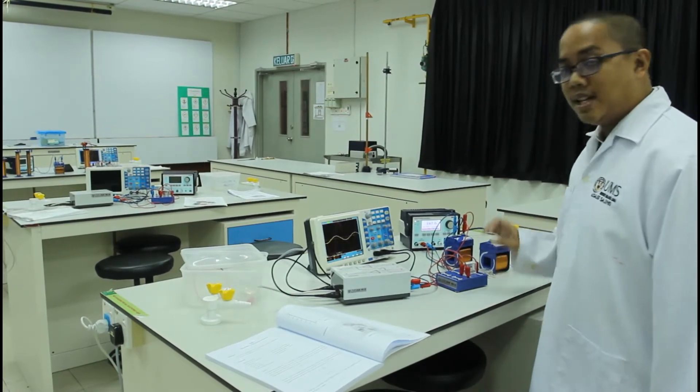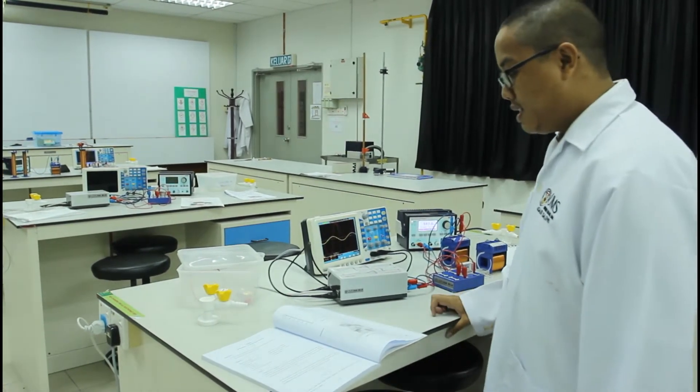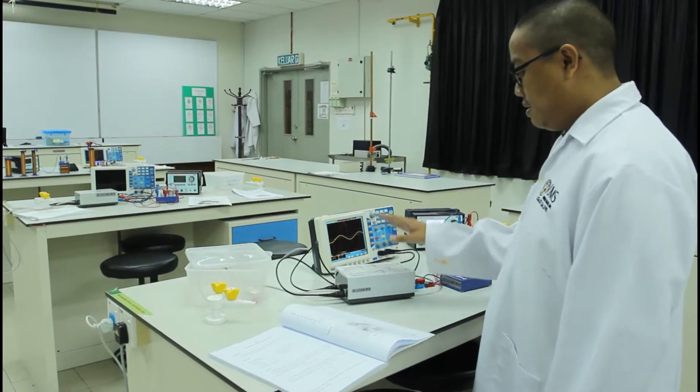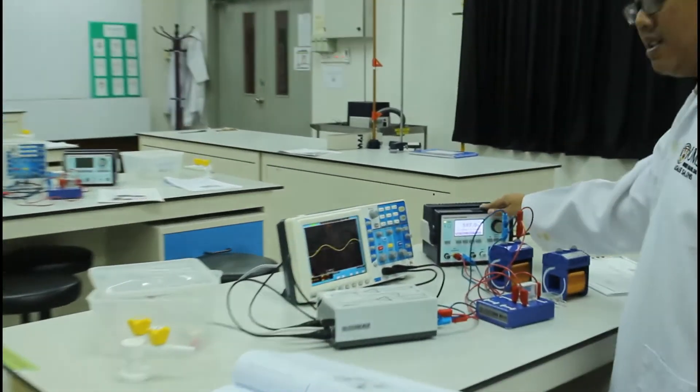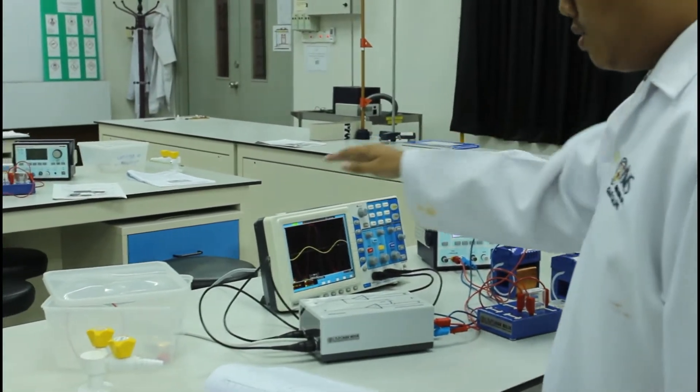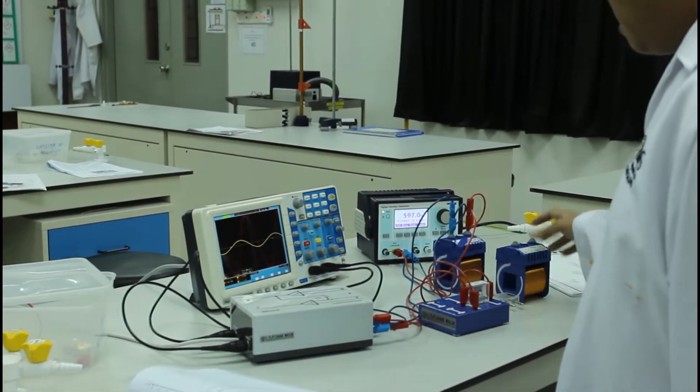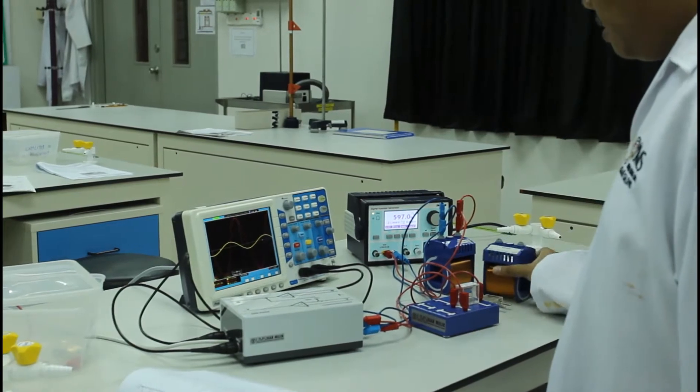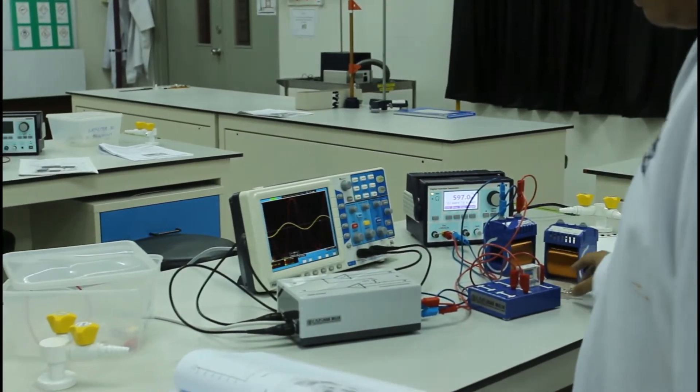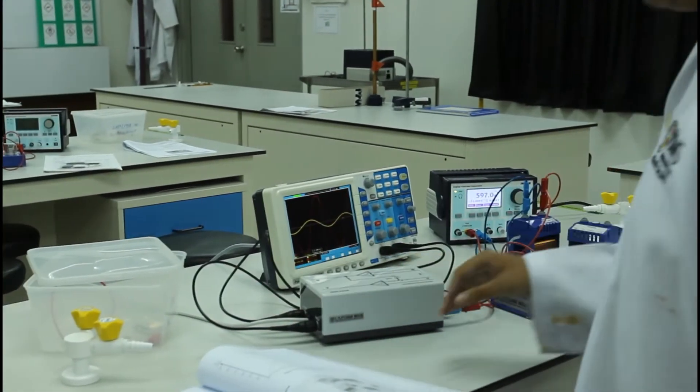In this experiment, here are the several apparatus: difference amplifier, digital function generator, oscilloscope, connection box, coils, resistor, BNC, and connecting cord.